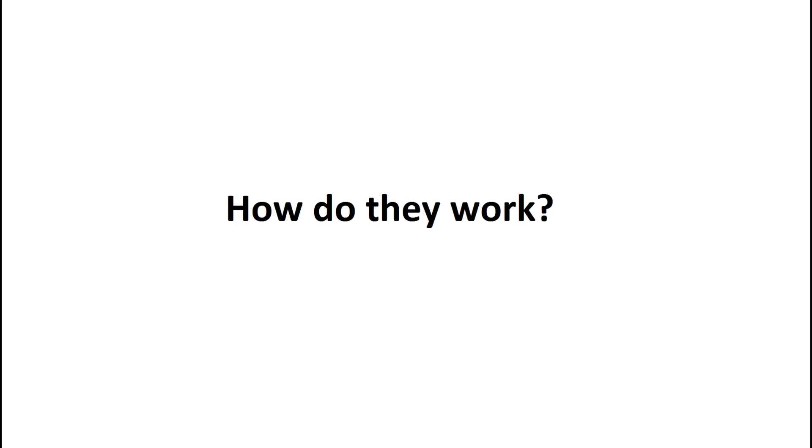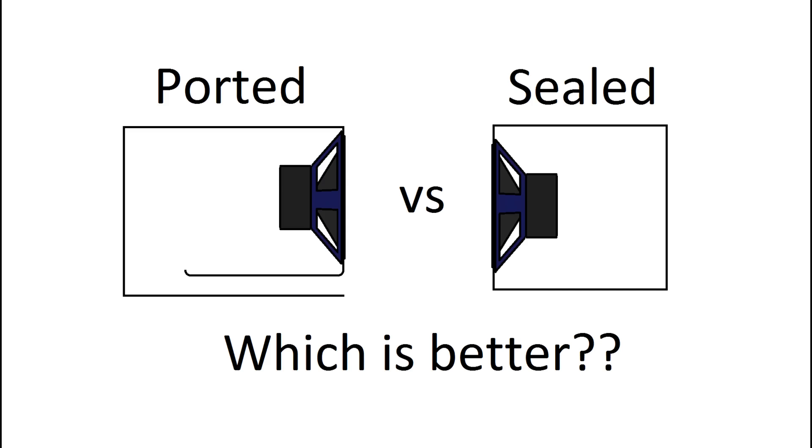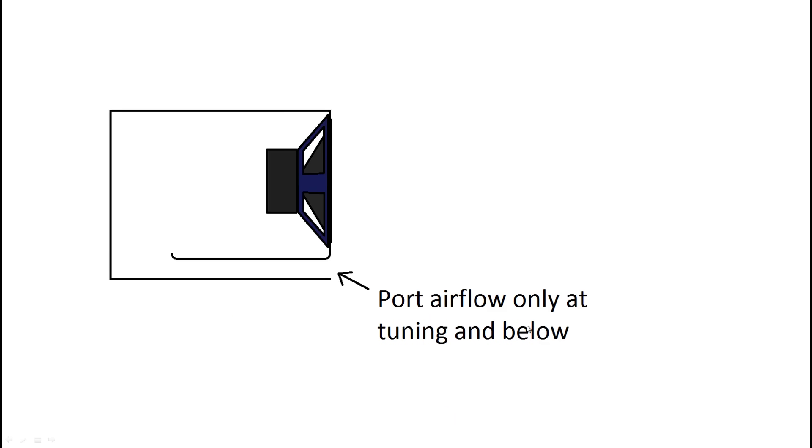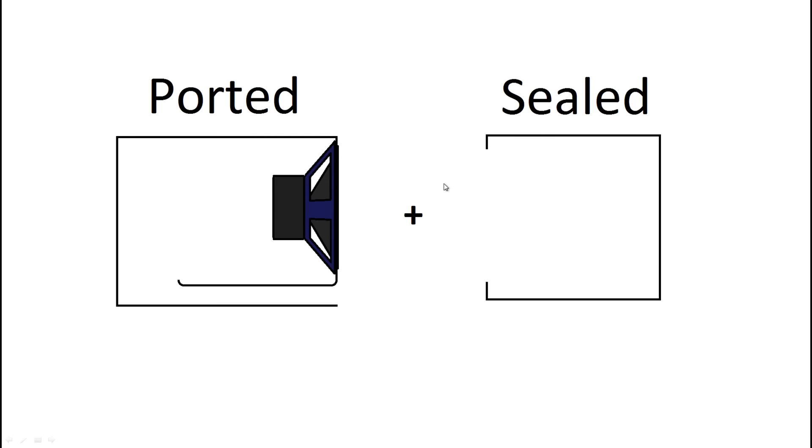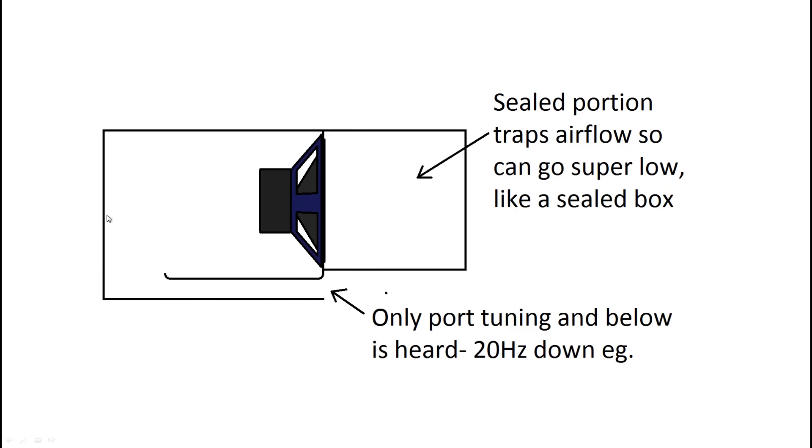Just like the other video I'm going to go through how they technically work just to give you an idea. So I've explained the differences between the sealed and the ported box and how the difference is you've got this port which air can flow through or resonate through so air can move through at its tuning or below. Now this is very key because in a 4th order bandpass when you've got a ported section and a sealed box the port is the only thing you can hear.